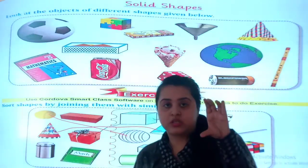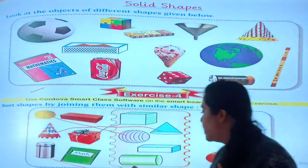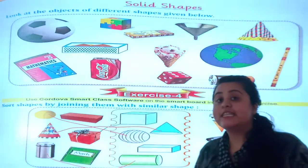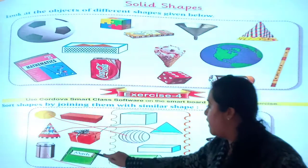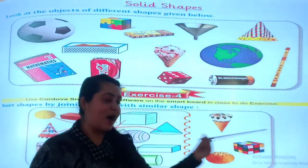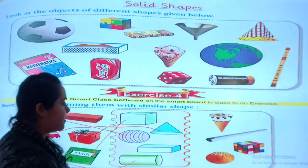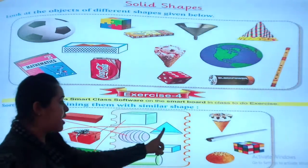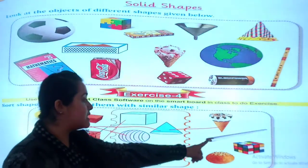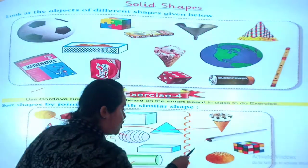Now this is a tin box. It is in cylindrical shape, so I will join this with the matching figure. Now it comes to the mathematics textbook — it is similar to a square shape, so I will join it here. Ice cream is similar to a cone shape, so I will join it here. Now this is the tube light — what similar shape can we find for it? I will join it here.